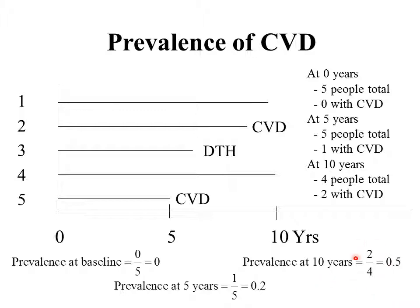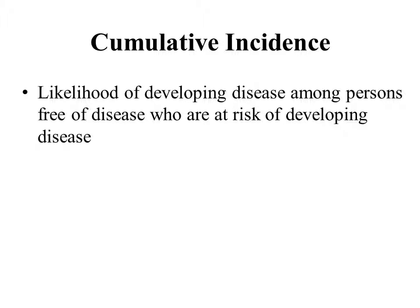The prevalence at 10 years: we had four people total remaining in our survey, two of whom had developed cardiovascular disease, giving us 50% prevalence at 10 years. Our next concept is cumulative incidence. Incidence is not the same as prevalence. Cumulative incidence can be thought of as the likelihood of developing disease among persons free of disease who are at risk of developing the disease.